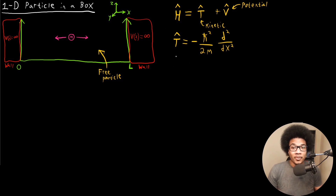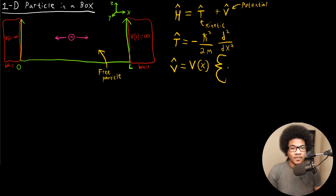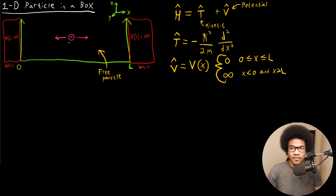Unlike the free particle, we're actually going to have a potential to define here. We need to define a function that depicts what we have in the picture: no potential in the box, but an infinite potential at the edges. This potential function will be zero when x is between zero and L, and it's going to be infinite anywhere past that — so when x is less than zero or x is greater than L, the particle encounters an infinite potential and can't go past it.